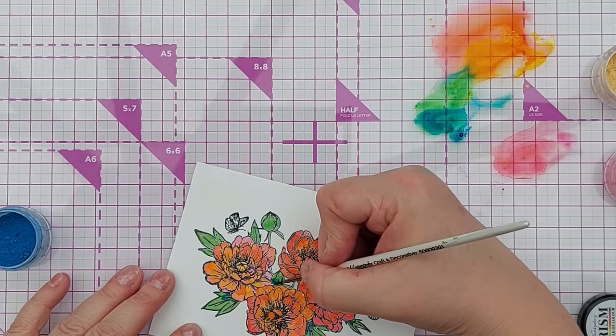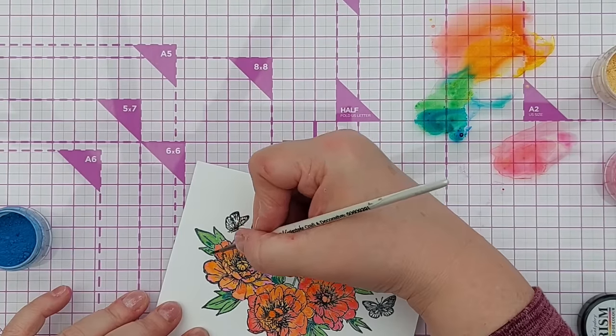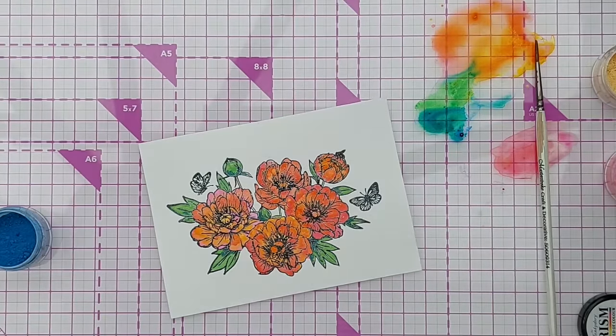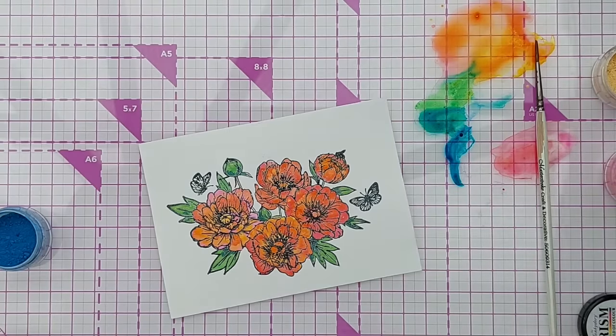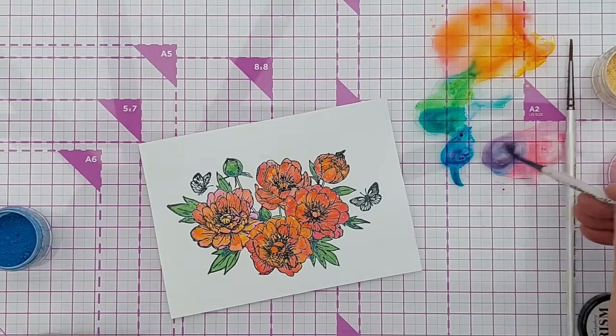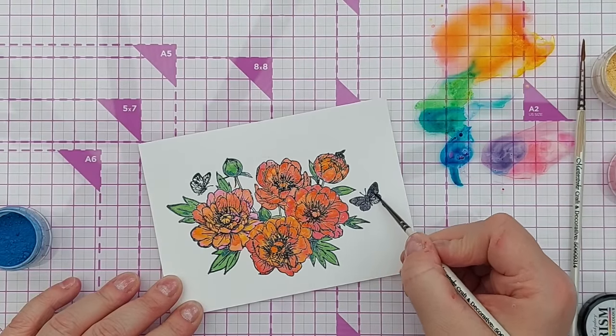And again, as I say, you can add darker colors to create shadows, depth, variation. This isn't my best coloring, I'm doing this really quickly just to give you an idea. Well, I might do this butterfly in, let's get a bit of that blue there and a bit of that pink and create a little purple. And we'll just do the butterflies in that. They're a bit dark but never mind.